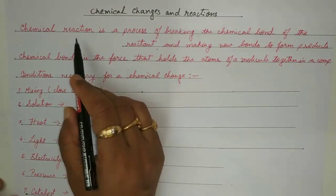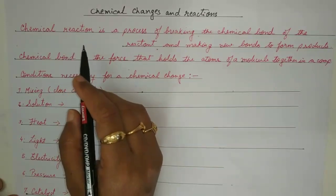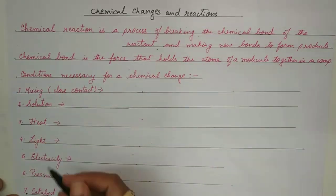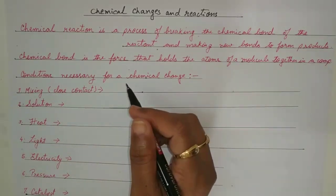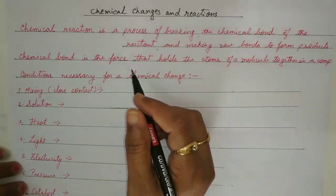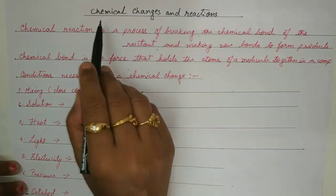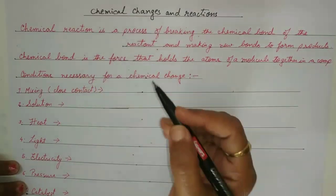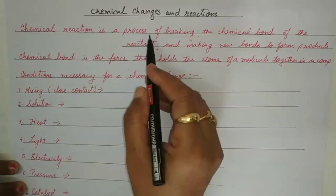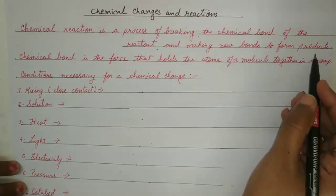In a chemical reaction, the particles collide, and the collision can be by close contact or by the supply of energy in the form of heat, light, electricity, and so on. Last year you studied physical changes and chemical changes, and it was clearly mentioned that whenever there is a chemical change, some new substances are formed through a chemical reaction. It is the process of breaking the chemical bonds of the reactants and making new bonds to form products.